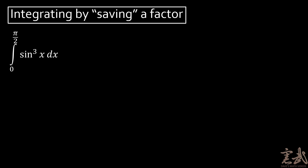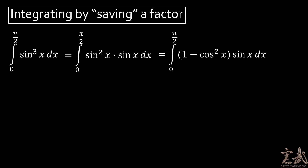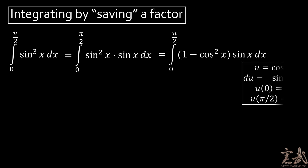I think that everybody watching this video is able to integrate something like sine cubed of x — in other words, when n is a relatively small number. In this case, we can integrate by saving a factor. That is to say, rather than writing sine cubed of x, we can write sine squared of x times sine of x.